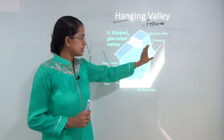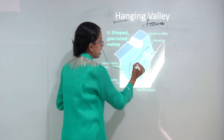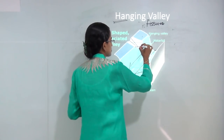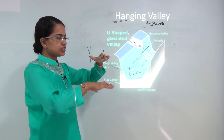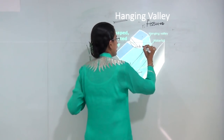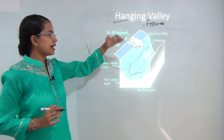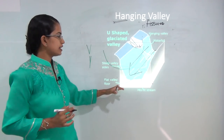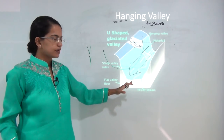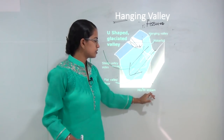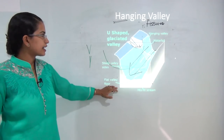The hanging valley: you have the main glacier flowing in this region, and then another glacier that moves and joins the main glacier. The glacier moving at a higher elevation than the main glacier creates a hanging valley. The hanging valley is at a higher elevation compared to the main valley, and the stream which separates out is known as the misfit stream.